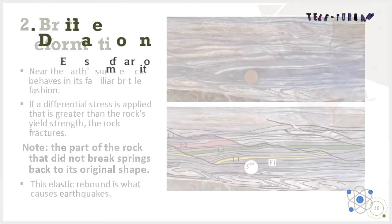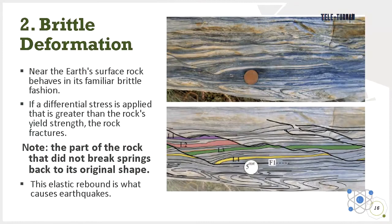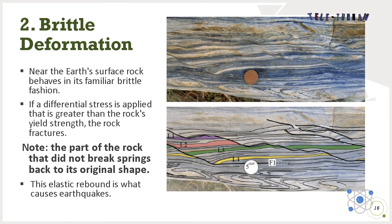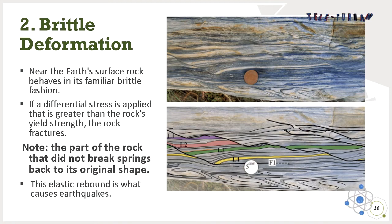Second, we have brittle deformation. Near the Earth's surface, rock behaves in its familiar brittle fashion. If a differential stress is applied that is greater than the rock's yield strength, the rock fractures. The part of the rock that did not break springs back to its original shape. This elastic rebound is what causes earthquakes.